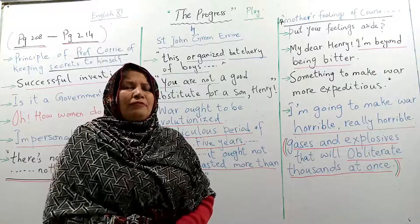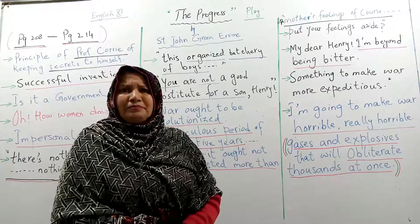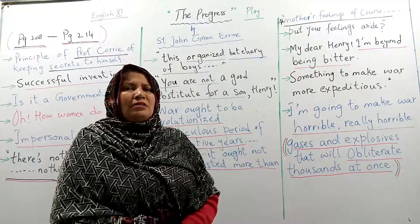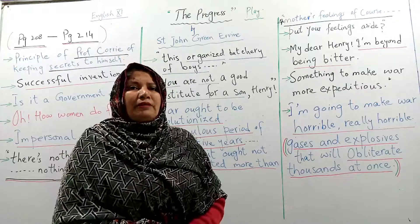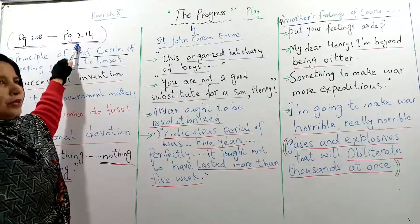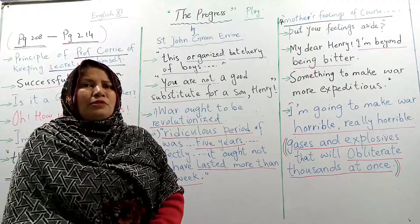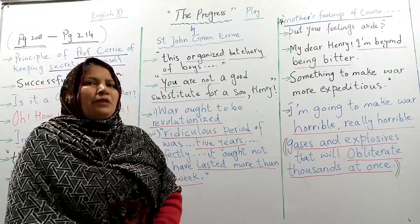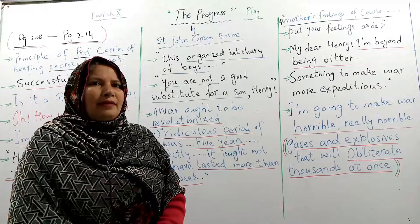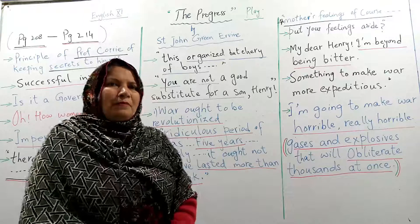The major characters are: number one, Professor Corley, and number two, Mrs. Meldon. Mrs. Meldon and Corley are brother and sister. Mrs. Meldon had a great personal loss — the death of her son Eddie in the war. Now let's start from page number 208. In our previous lecture we thoroughly read pages 206 and 207, so now let's go to page number 208.